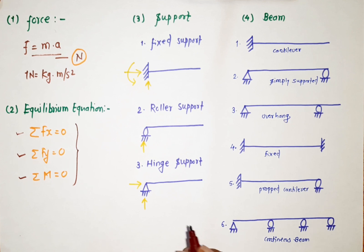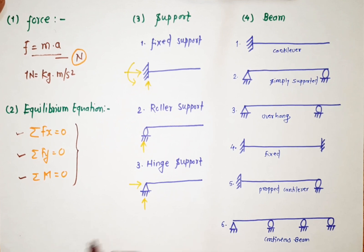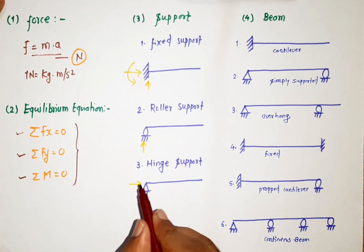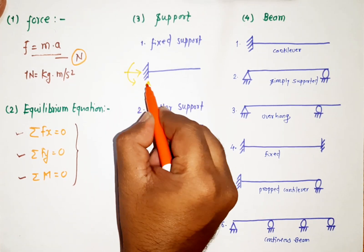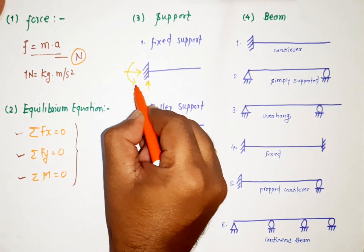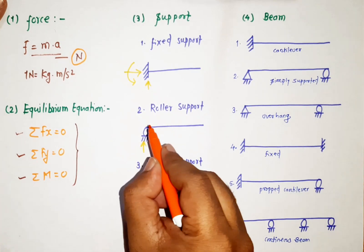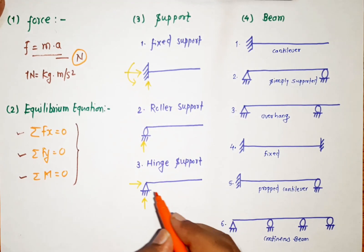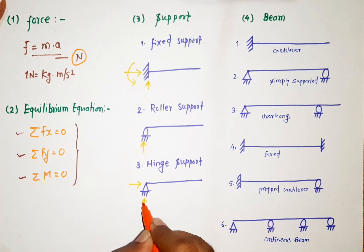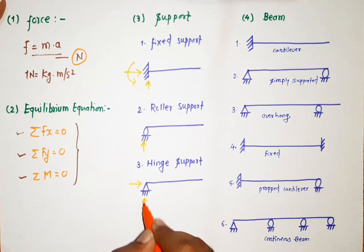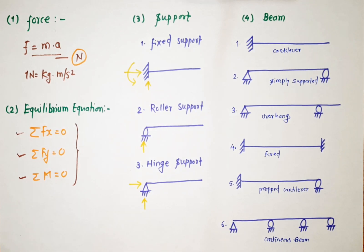Our third concept is support. There are different types of support. For a fixed support there are three unknowns: one along the x-direction, one along the y-direction, and one moment. For a roller support there is one unknown along the y-direction only. For a hinge support there are two unknowns: one along x and one along y.